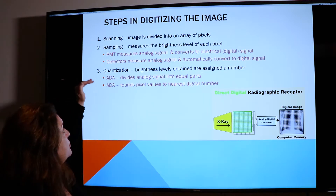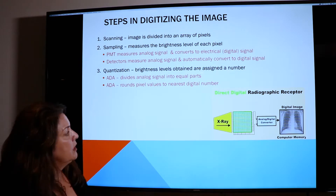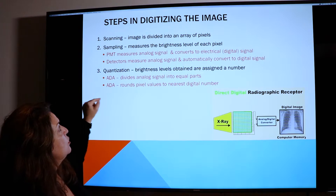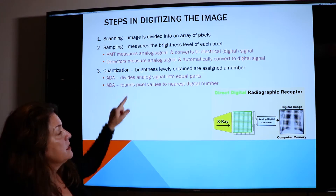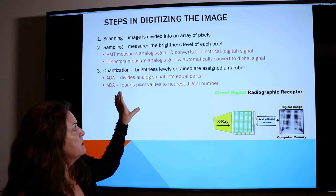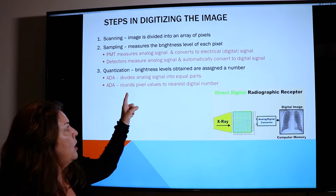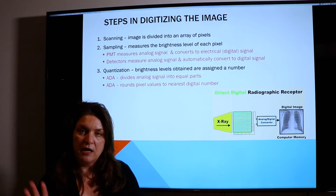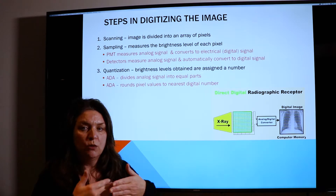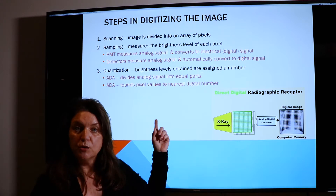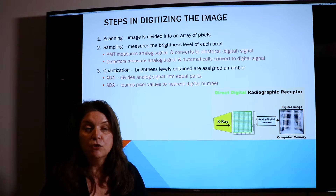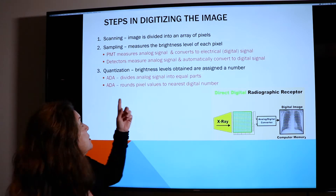Here are the three steps outlined again. The main thing to take away from this is that in quantization, the analog-to-digital converter is actually rounding the numbers as the waveform comes in. Those numbers have to be rounded to a very discrete, precise number. So the analog-to-digital converter is actually where the conversion of the image happens, and that's in quantization.